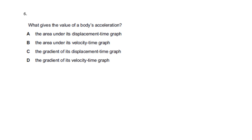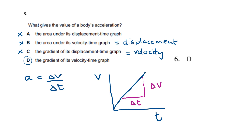Question six: what gives the value of a body's acceleration? We know that acceleration is the gradient of the velocity-time graph, so the answer is D. Checking the others: the area under a velocity-time graph is displacement; the gradient of a displacement-time graph is velocity; and the area under a displacement-time graph doesn't have any significant physical meaning.